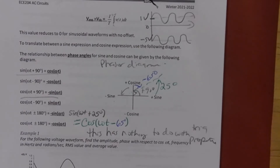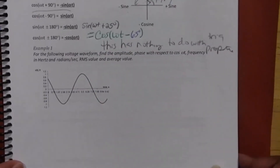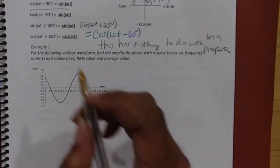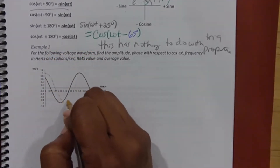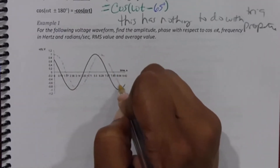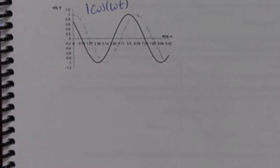There's an example at the bottom of the page. The dashed line represents the reference: one cosine(ωt). For the dark line, your job is to find the amplitude, frequency in radians per second, frequency in hertz, phase angle, RMS value, and average value. The dashed line is your reference point needed to find the phase angle.